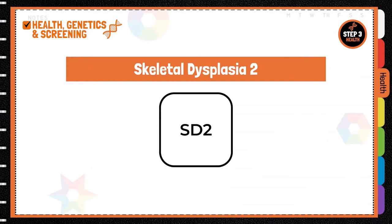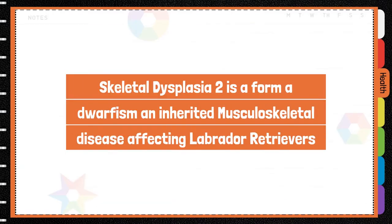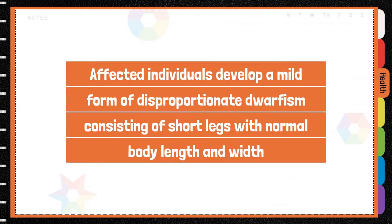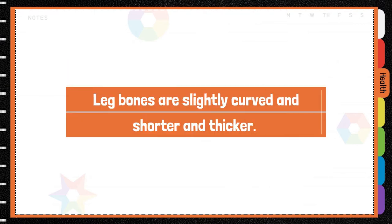Skeletal dysplasia 2 is a form of dwarfism, an inherited musculoskeletal disease affecting Labrador Retrievers. Affected dogs develop a mild form of disproportionate dwarfism, consisting of short legs with a normal body length and width.